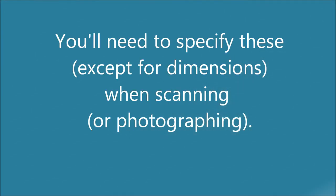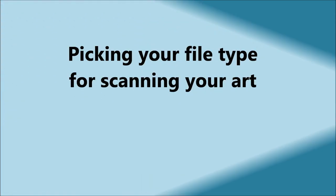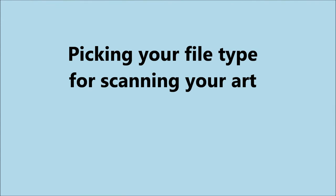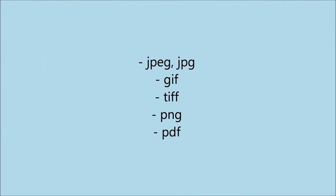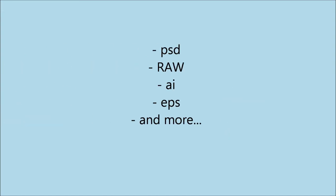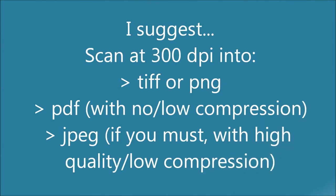You'll need to specify these, except for dimensions, which should be the same size as your art pieces when scanning. As for file type, you may be aware of file types such as JPEG, GIF, TIFF, PNG, and PDF, among others. You'll have a limited selection for scanning your art into. If you have made your art just slightly bigger than your trim size, as I suggested in part one, scan your art at 300 DPI into a format with low to no compression, such as PNG or TIFF, if available.